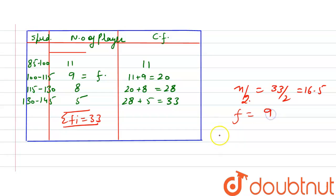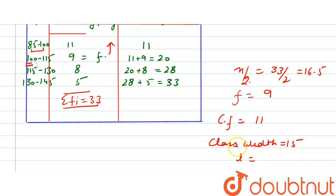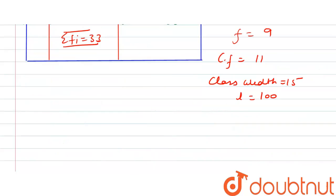CF is the cumulative frequency of the preceding median class, which is 11. The class width h, that is the interval duration, is equal to 15. And l is the lower limit of the median class, which is 100. So l equals 100.